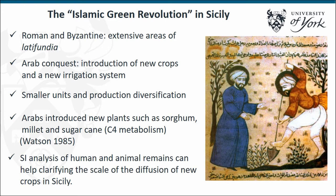One of the important things to take into account when discussing agriculture is that Sicily during Roman and Byzantine times had extensive areas of latifundia. The Arab conquest introduced new crops and a new irrigation system, which made agriculture more productive, causing the population to grow and society to change accordingly. Watson explained this theory about an Arab agricultural revolution, claiming that the Arabs introduced new crops to the places they colonized, and many of these crops are C4 food plants.